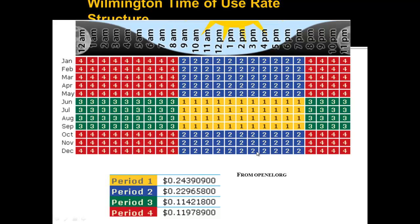The next thing is time of use rates. This is an example of Wilmington, Delaware's time of use rate structure, where rates differ by time of day. Utilities are trying to lower their peak, which is highest in summertime and during the day. Period one is summertime — June, July, August, September — from 9 a.m. to 7 p.m., and that's the highest cost at $0.24 per kilowatt hour.